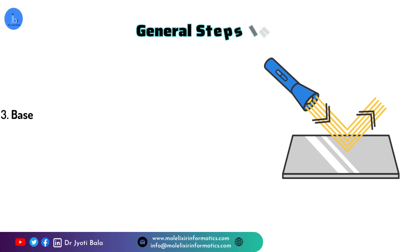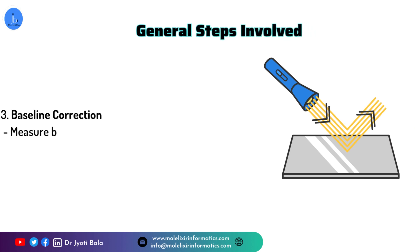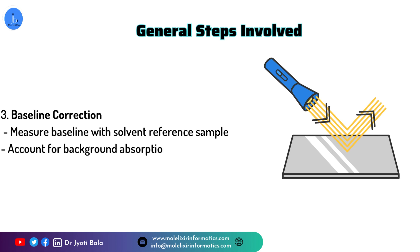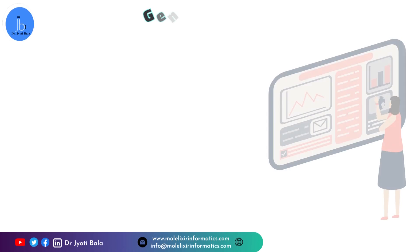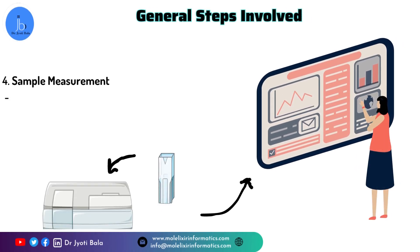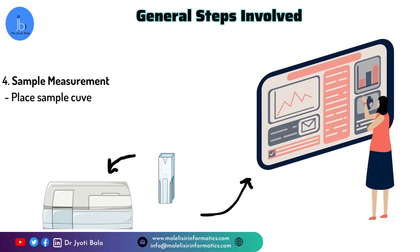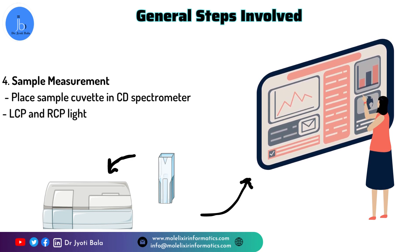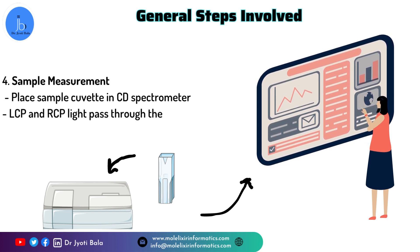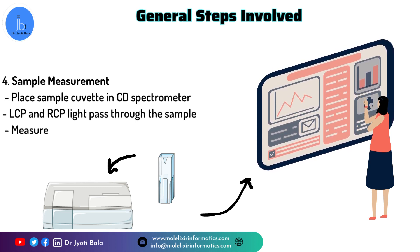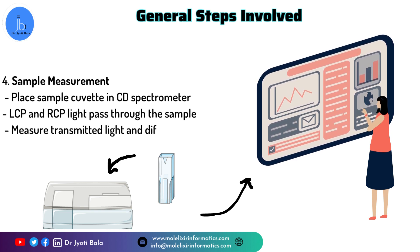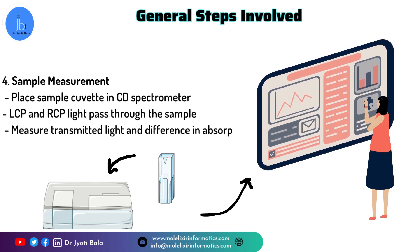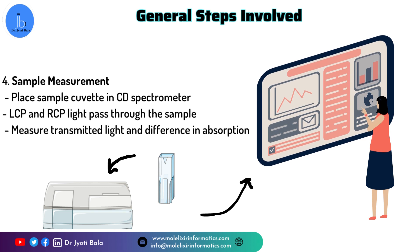Next, you also have to work on the baseline correction. A baseline measurement is performed with a solvent reference sample to account for any background absorption or instrument noise, and later on you can do the sample measurement. Usually, the sample cuvette which contains the dissolved molecule is placed in the CD spectrophotometer. The spectrophotometer emits both LCP and RCP light which passes through the sample. The transmitted light is detected and the difference in the absorption between LCP and RCP is measured.